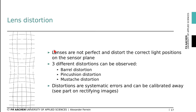Finally, a word on lens distortion. Lenses tend to be imperfect, and distortion gives us incorrect information when estimating the position of a world point relative to the camera sensor. In general, there are barrel distortions, pin cushion distortions, and moustache distortions. As these are systematic errors, we can use checkerboard calibrations to account for them in the next section.